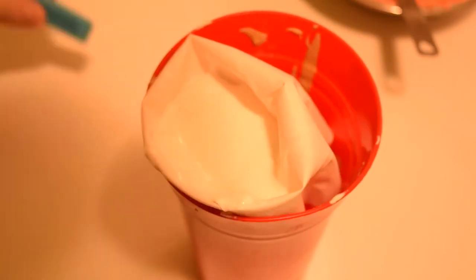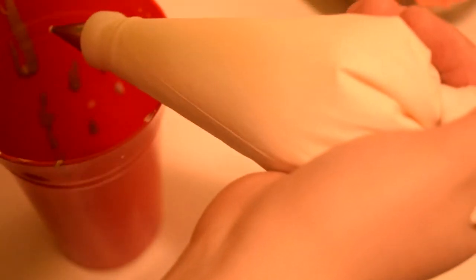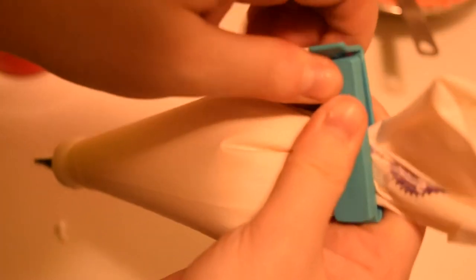Once filled I like to use these bread clips to secure the pastry bag. This way no icing flows out when I put down my pastry bag. This bag is fitted with round tip number three.